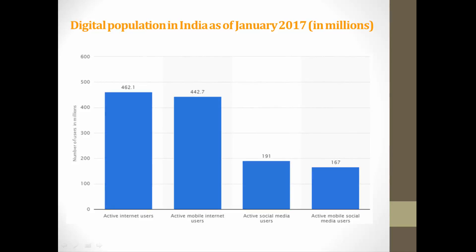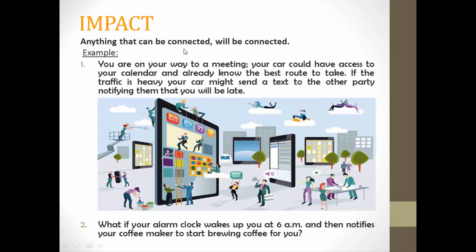Now I'll tell you how IoT devices work and how they are useful for us. In the first example, if you're on the way to a meeting, your calendar will be accessed by your car and your map will show you the best route. If that route is busy with traffic, the device will leave a message or drop an email to your destination contact saying you will be late. The second example: if your alarm wakes you up in the morning and you also want your coffee ready, IoT technology can be adjusted so your coffee will be ready as well.